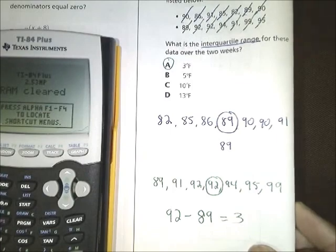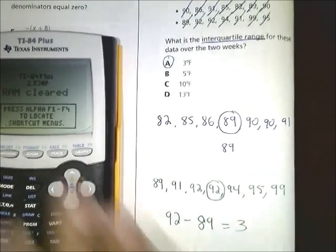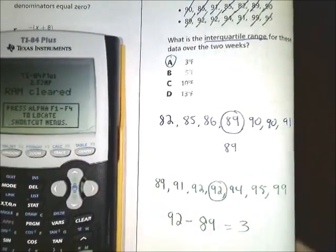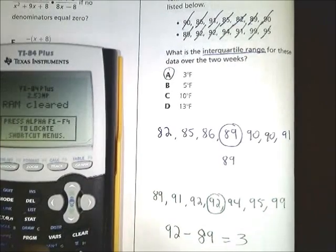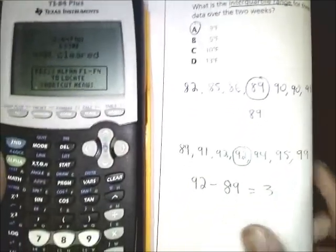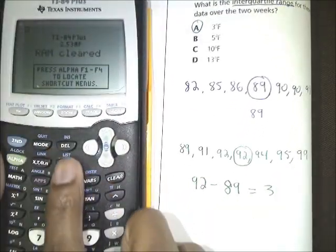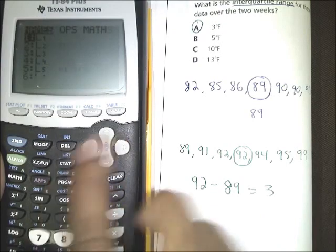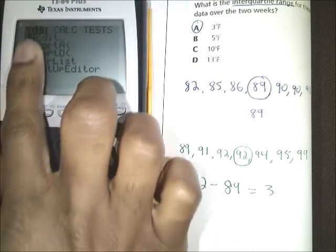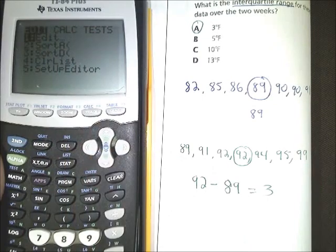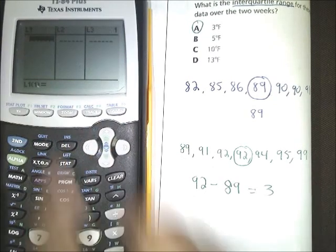All right, another way that you can plug this information in is you can use your calculator as an easy way to do these problems. If you press stat on your calculator, it'll take you to this table where you have the choice to edit. Let's just edit. Once you press enter, you're going to be underneath your L1.